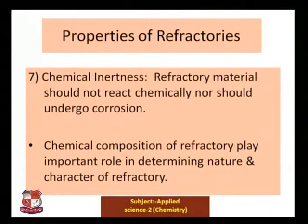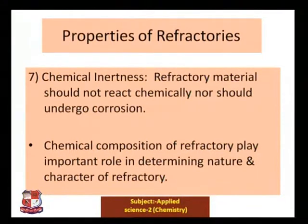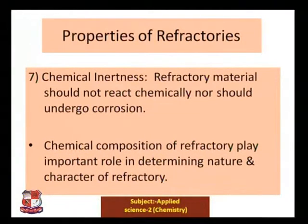The seventh desirable property is chemical inertness — very important. The refractory material should not react chemically or undergo corrosion. Chemical composition of the refractory plays a very important role in determining its nature and character.